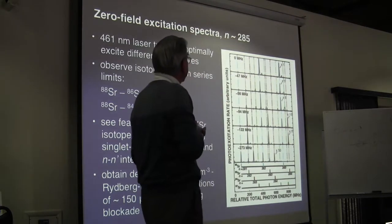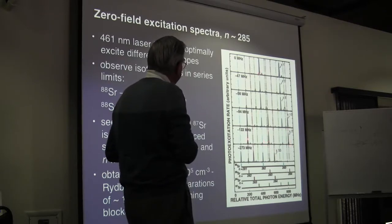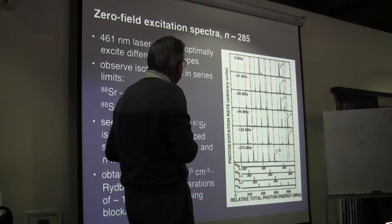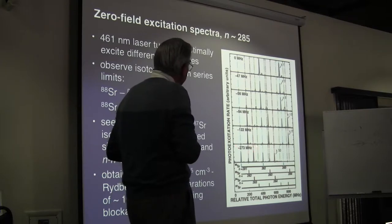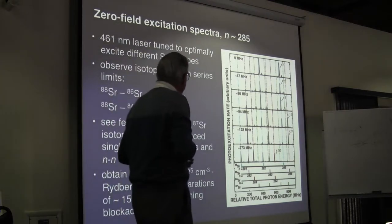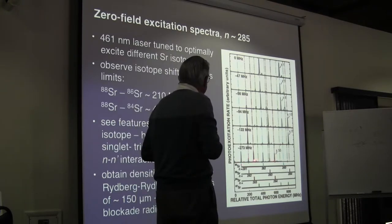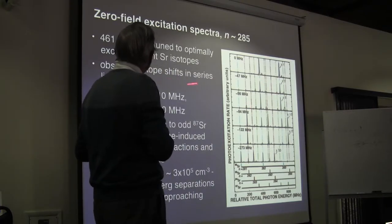You also see a smaller series of peaks corresponding to excitation of NS levels. If we detune the laser by 122 megahertz, we get again a series of Rydberg peaks, but interestingly they're not at the same positions — here we're preferentially tuned to excite the 86 isotope, which is about 8% of the beam. You still see some residual excitation of the 88 isotope. If you detune by 273 megahertz, you're optimally tuned to create the 84 isotope, and you see yet another new series of Rydberg peaks corresponding to excitation of 84 strontium with n equals 283, 284, and so on.